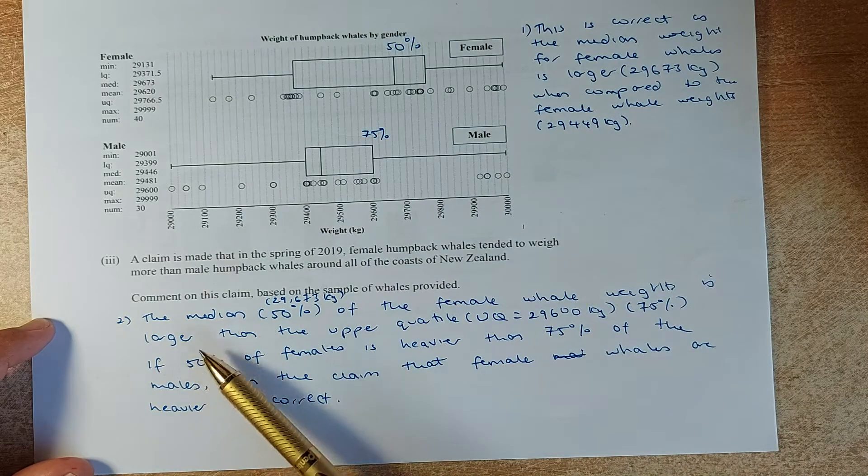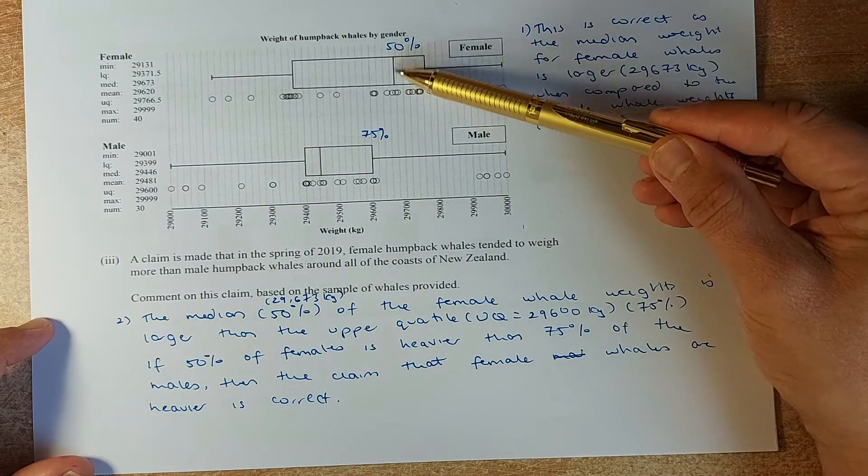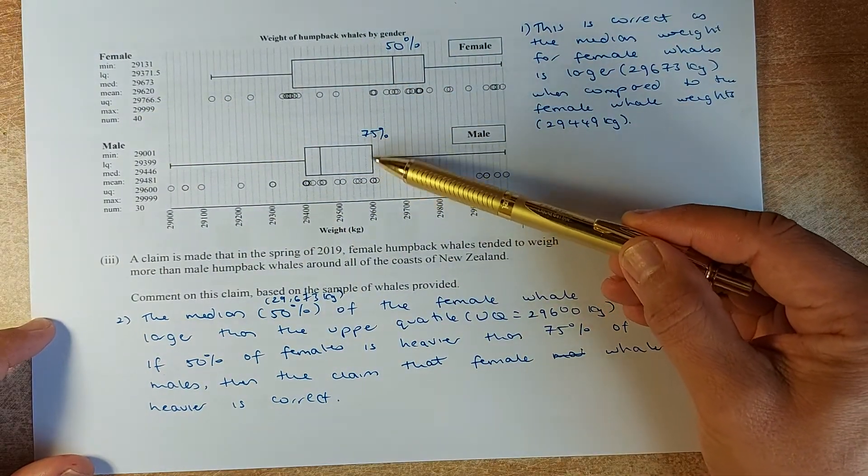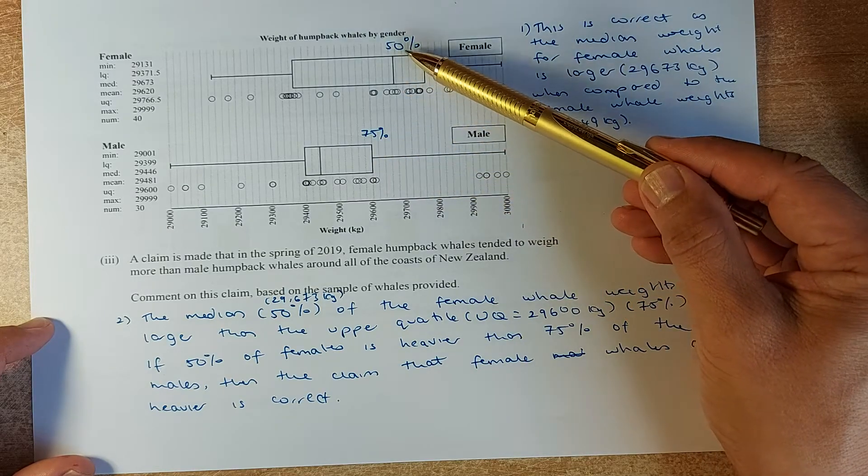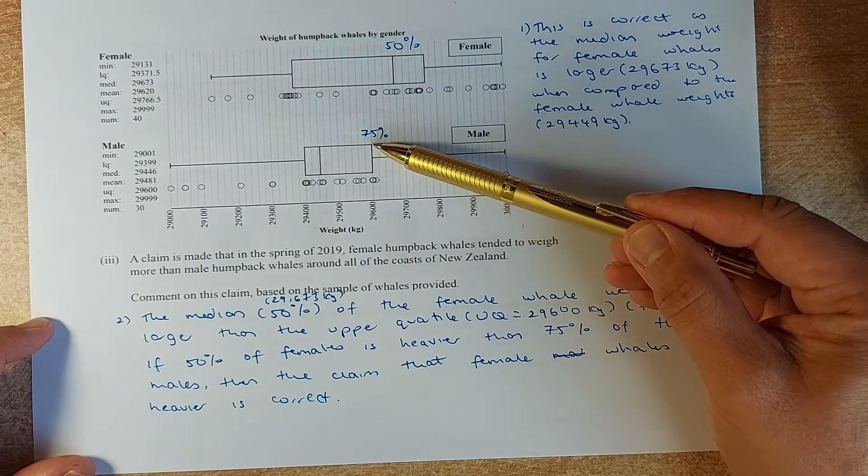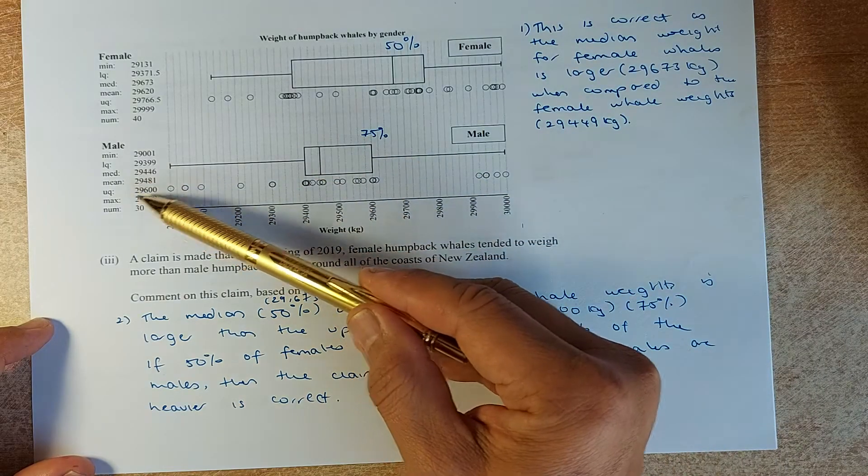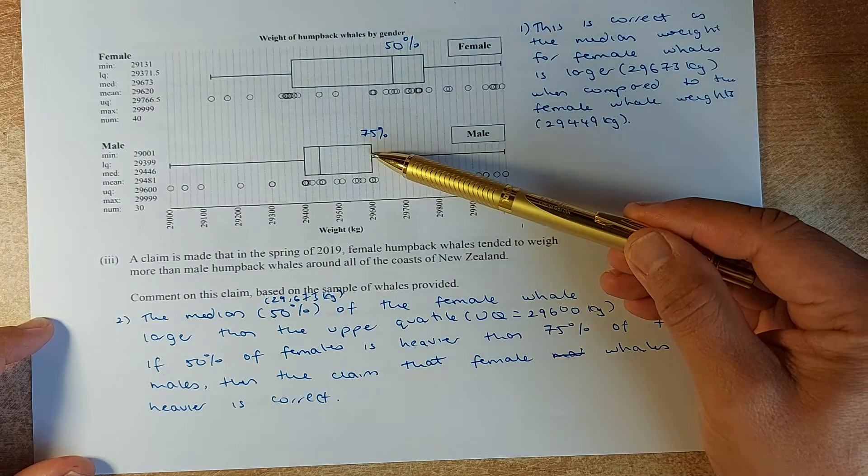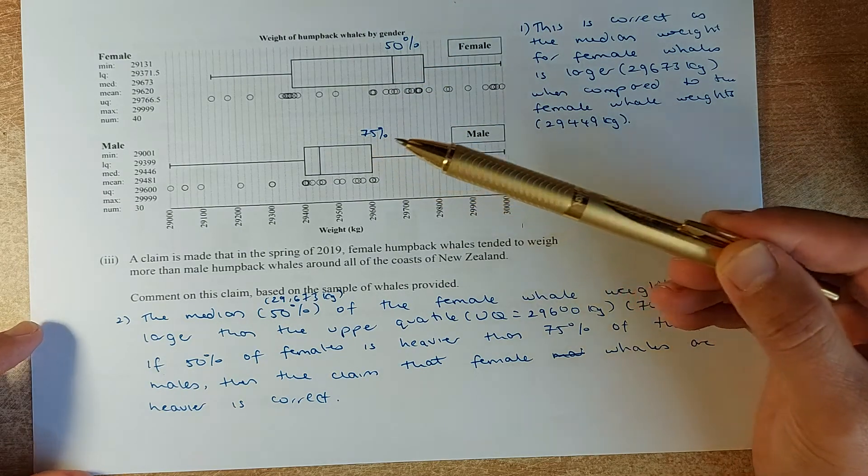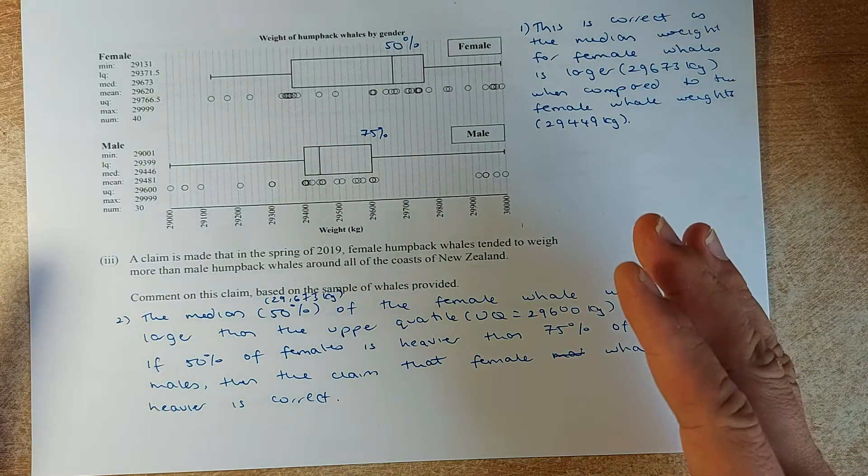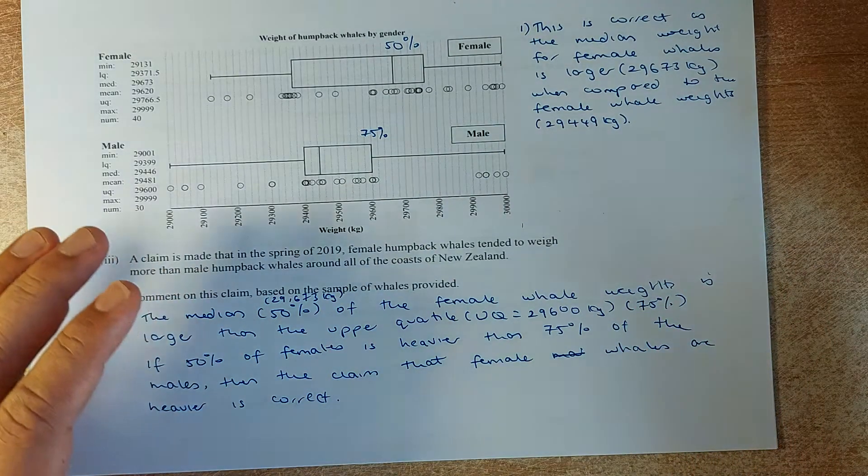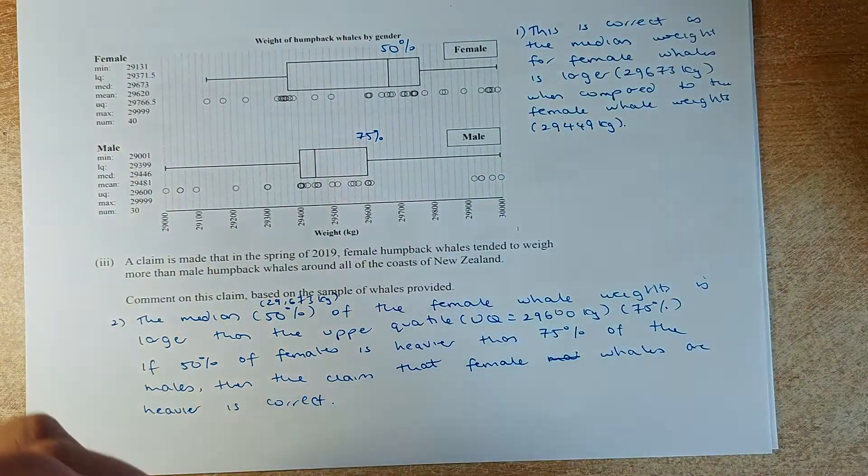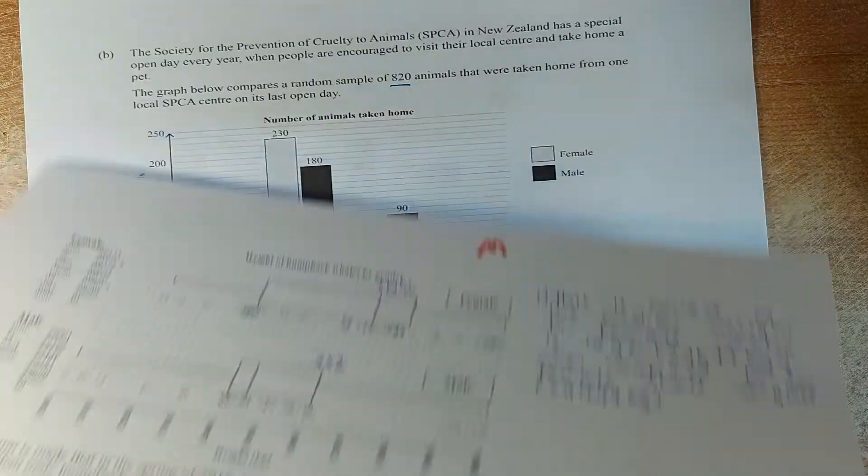The second point is called the half-three-quarter rule. In this case, the median of the female, which is 29,673, is more than the upper quartile of the male. So the median, which is 50%, is more than 75% of the male. The male upper quartile is 29,600. So if 50% or half the female is heavier than three-quarter of the male, then we can confidently claim that female weighs heavier than male. And if you can get that, you will get another merit in this paper.